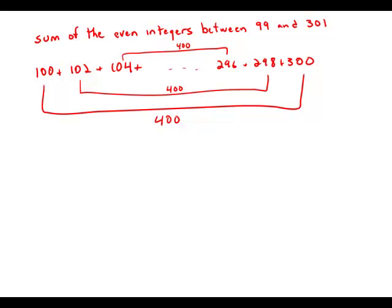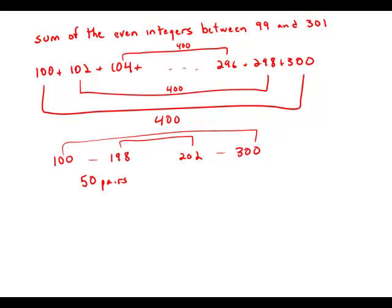Well, how many of these pairs do we have? Well, we're going to have numbers going from 100 to 198, and those are going to be paired with numbers. The top one is 300 going down to 202, and from 100 to 198, it turns out we have 50 pairs, each one of them adding up to 400.